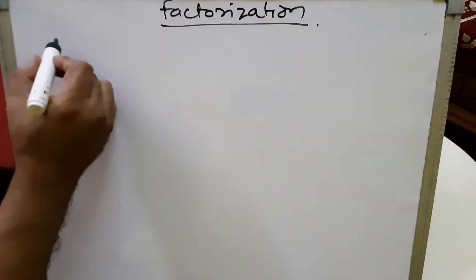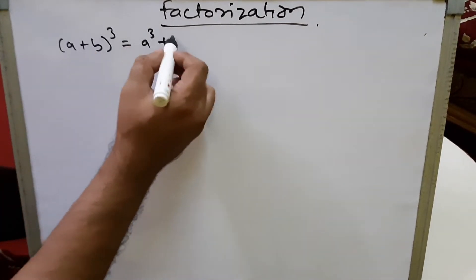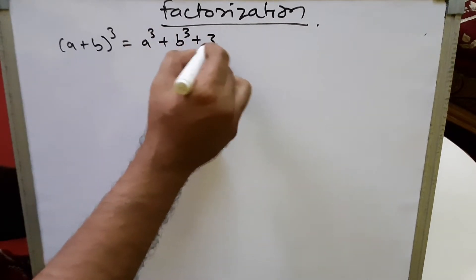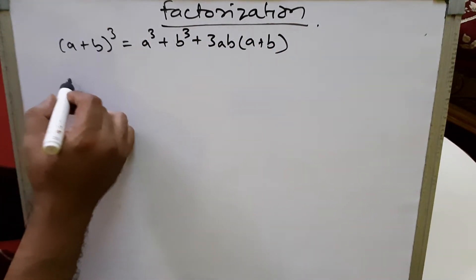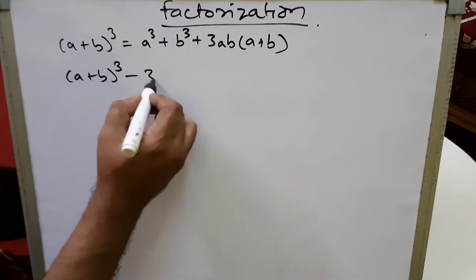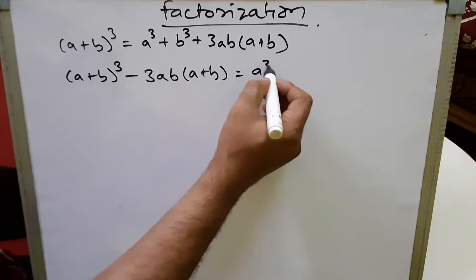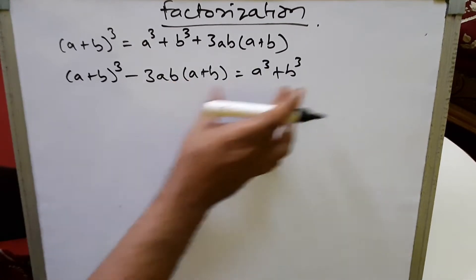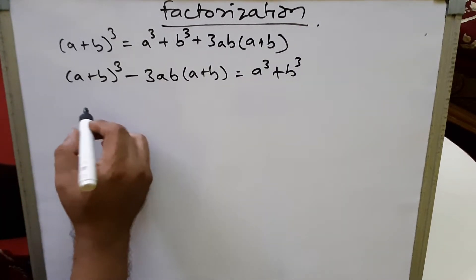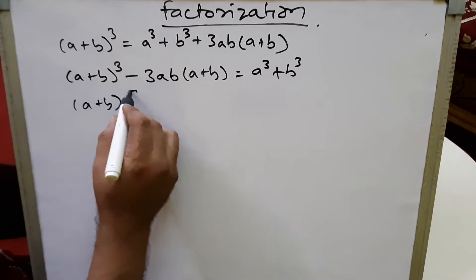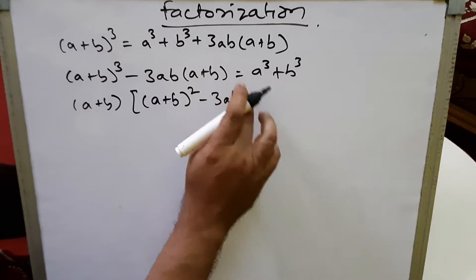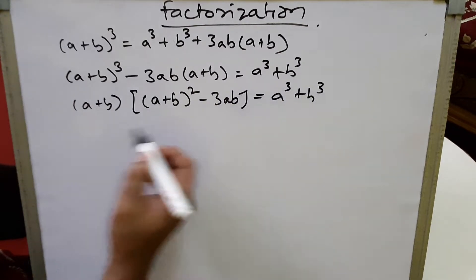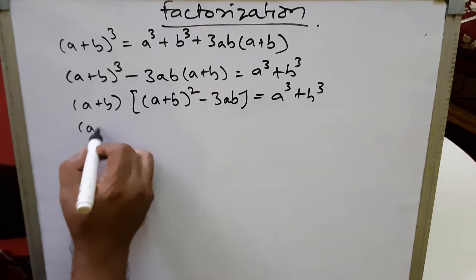In the previous chapter on expansions, we studied the identity: (a+b)³ = a³ + b³ + 3ab(a+b). If we transfer the 3ab(a+b) term to the left-hand side, we get (a+b)³ - 3ab(a+b) = a³ + b³. To simplify, we take (a+b) common, giving us (a+b)[(a+b)² - 3ab] = a³ + b³.